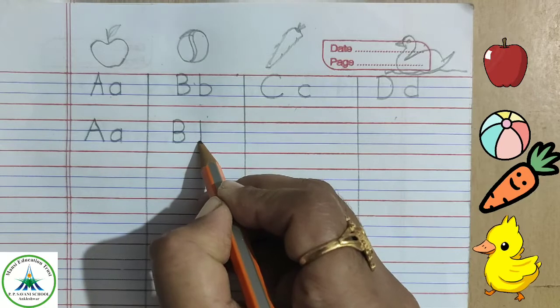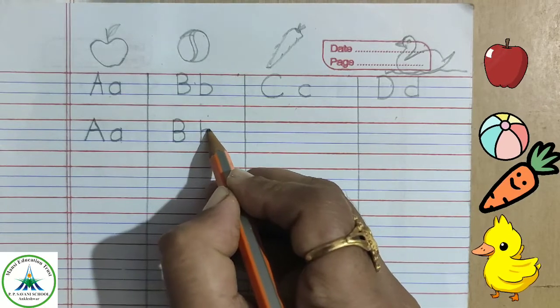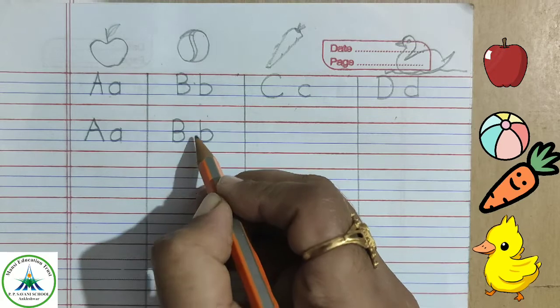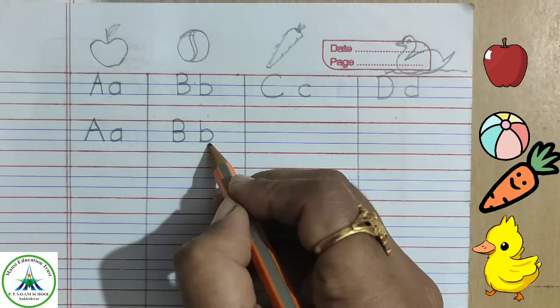Now, small letter B, a standing line and a curve at the end of this line. Okay, small letter B.